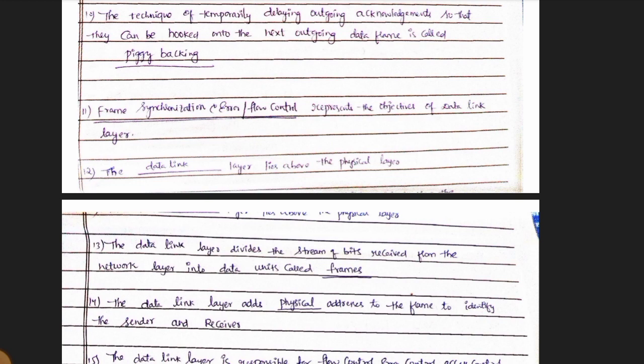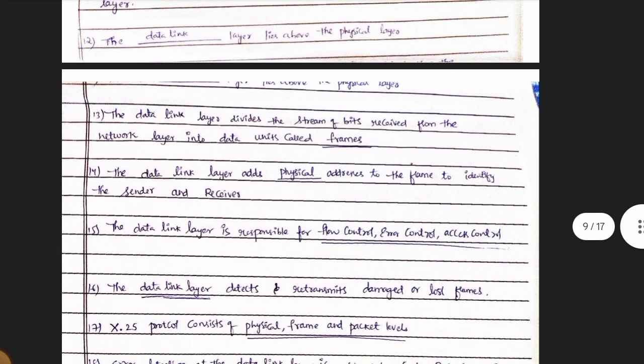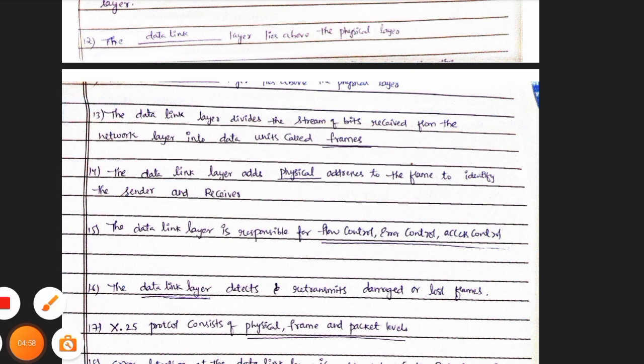Which layer is above the physical layer? The data link layer. The data link layer divides the streams of bits received from the network layer into data units called frames.